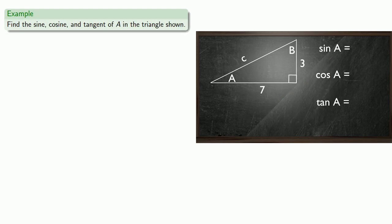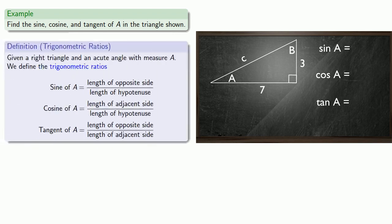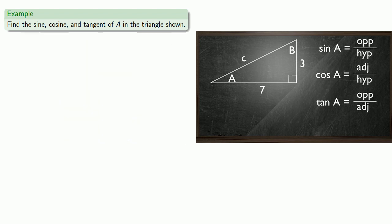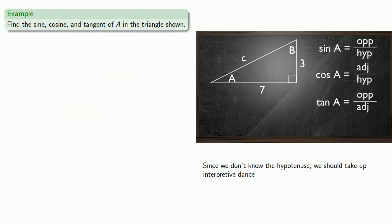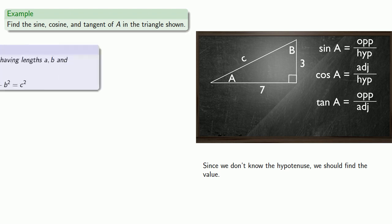Let's try to find the sine, cosine, and tangent of angle a in the triangle shown. Pulling in our definition, we have sine = opposite over hypotenuse, cosine = adjacent over hypotenuse, and tangent = opposite over adjacent. Since we don't know the hypotenuse, we should find that value. Because this is a right triangle, we know that we can use the Pythagorean theorem.